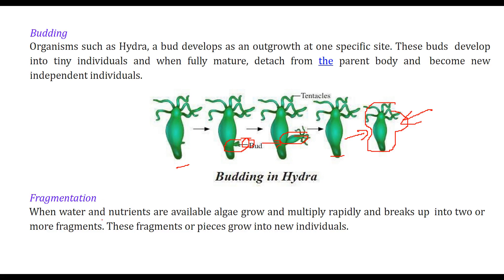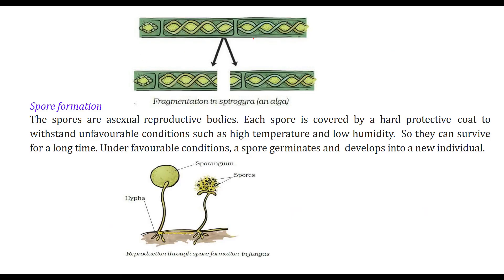In fragmentation, when water and nutrients are available, algae grow and multiply rapidly. The organism breaks up into two or more fragments, and these fragments grow into new individuals — multiplying hierarchically. This fragmentation is seen in algae also known as spirogyra.